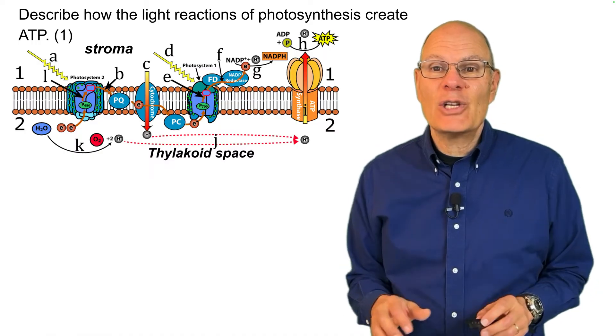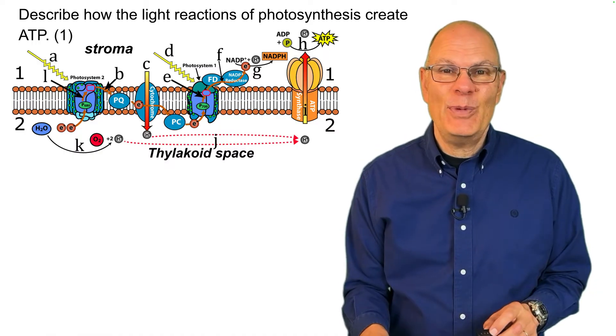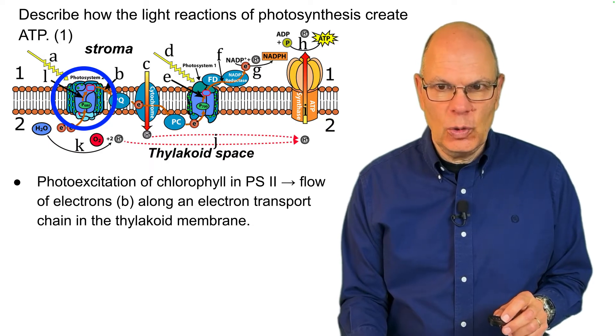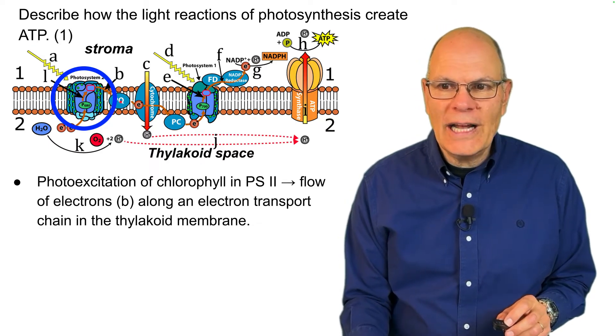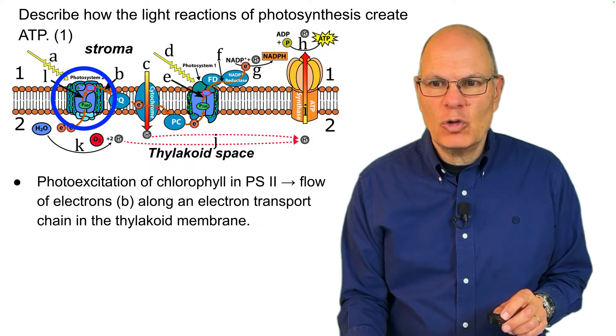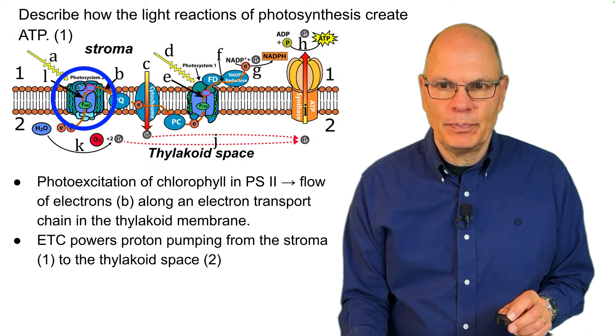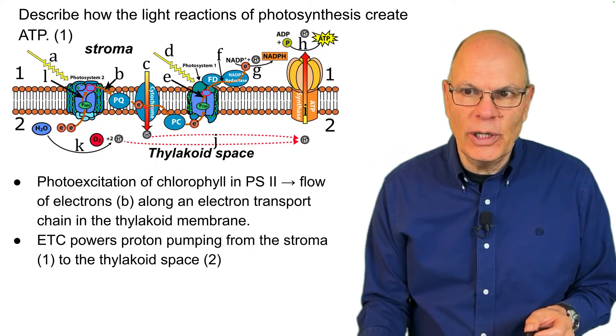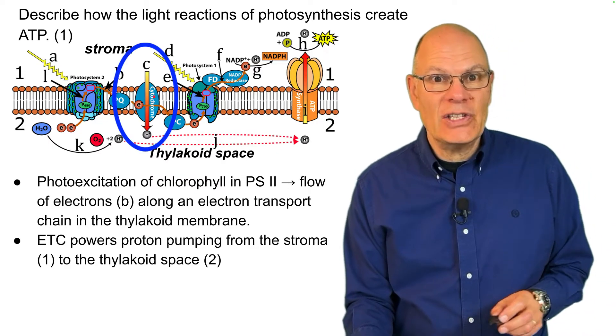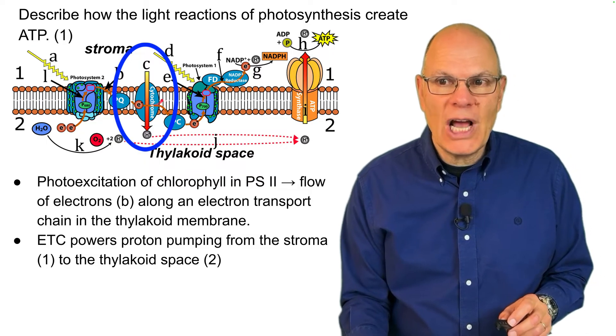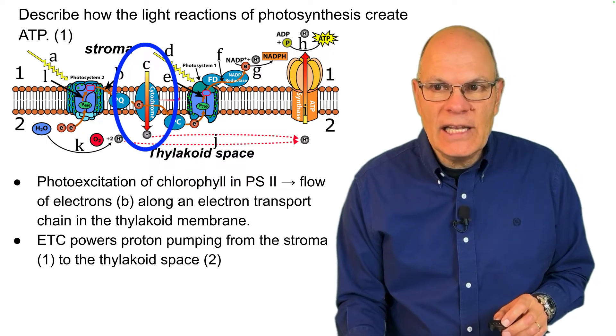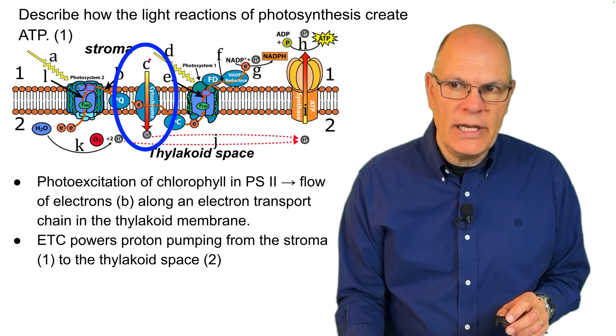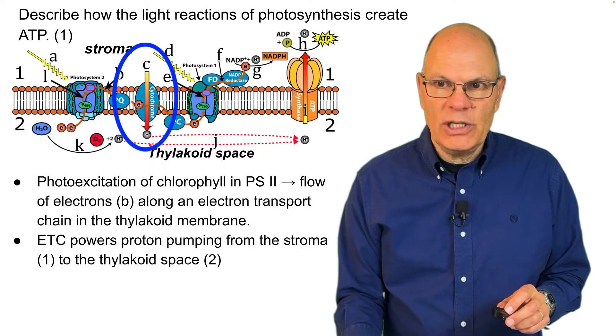Describe how the light reactions of photosynthesis create ATP. Photo excitation of chlorophyll in photosystem two leads to a flow of electrons along an electron transport chain in the thylakoid membrane. That electron transport chain, that's an electrical current, and it powers a device. In this case, the device is a proton pump that's embedded in the thylakoid membrane. And that pumps protons from the stroma into the thylakoid space.